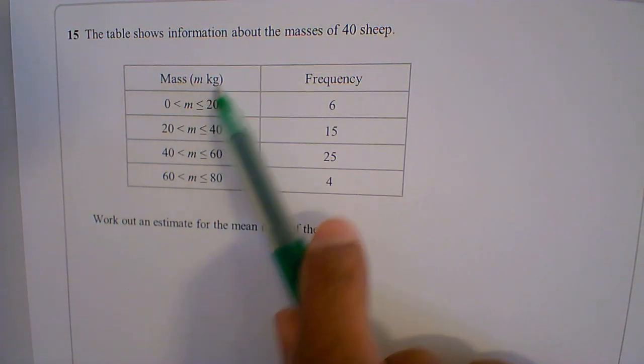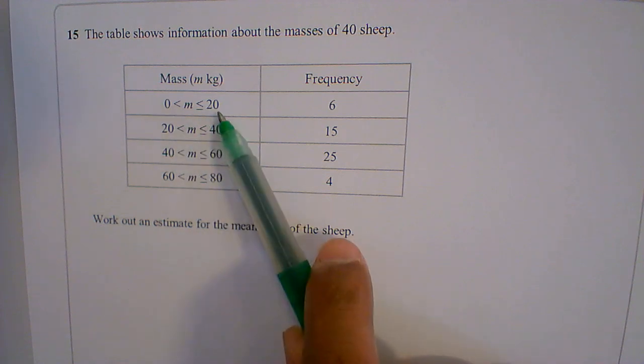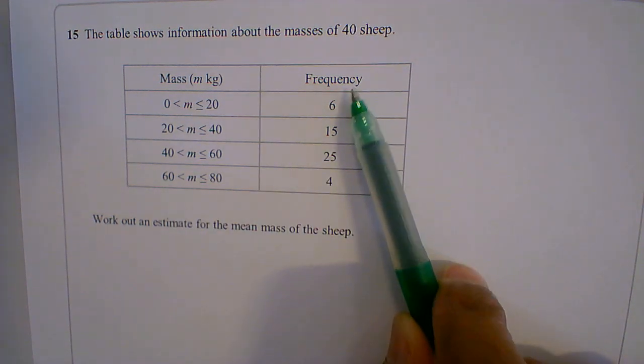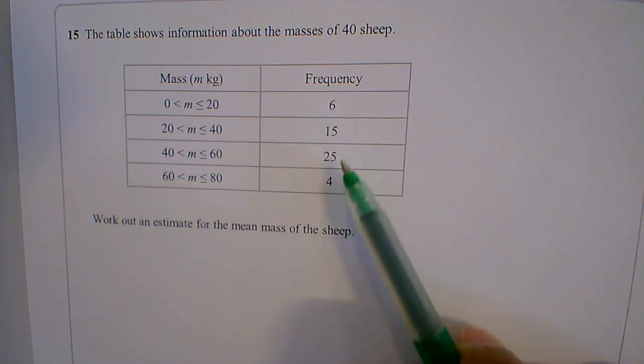We have mass and a class interval 0 to 20, 20 to 40, 40 to 60, 60 to 80, and we have frequencies 6, 15, 25 and 4.